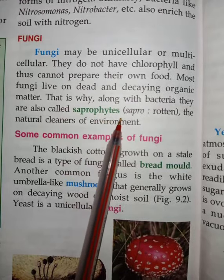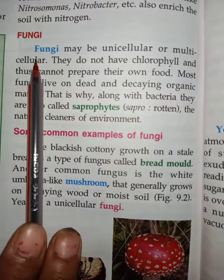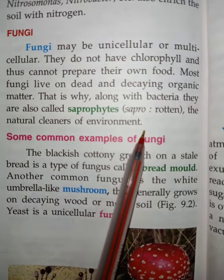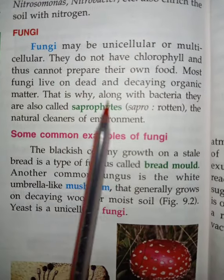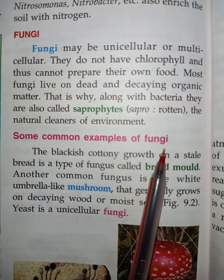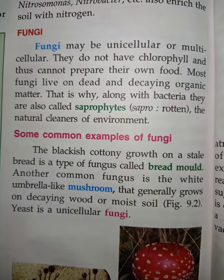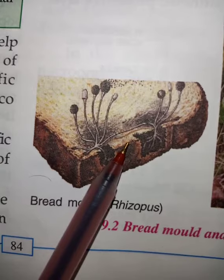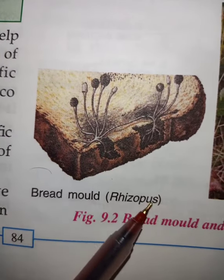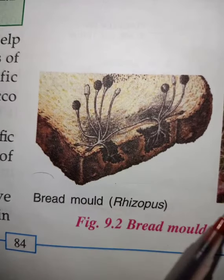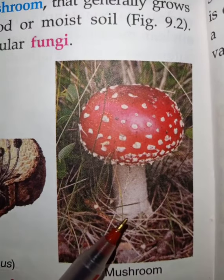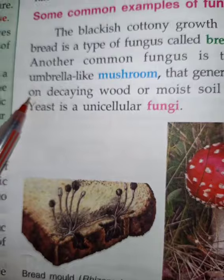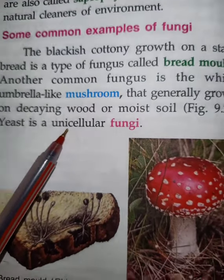Questions that arise here: What are saprophytes? How do fungi prepare their food? Why are saprophytes called natural cleaners of the environment? Some common examples of fungi: bread mold (the fungus is called Rhizopus), mushroom, and one of the most important — yeast. Yeast is a very useful unicellular fungi.